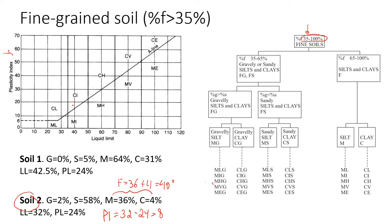Before using the flowchart, let's determine plasticity using the plasticity chart. The plasticity index is 32 minus 24, which equals 8. Locating the point with liquid limit 32 and plasticity index 8 on the chart, we see the point is below the A-line, which means the soil is silt. The classification symbol is ML.